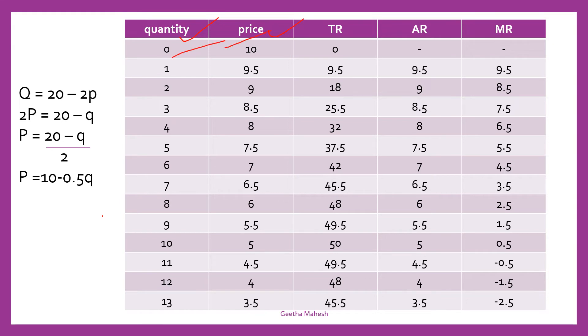P into Q, you will get total revenue. Observe this total revenue where the total revenue is maximum. So, maximum total revenue is 50.